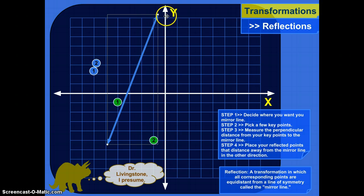So I decided where I want to put my mirror line. I'll just use the y-axis and pick a few key points. I only really need two points in order to draw a line. So I'm just going to pick out two points.